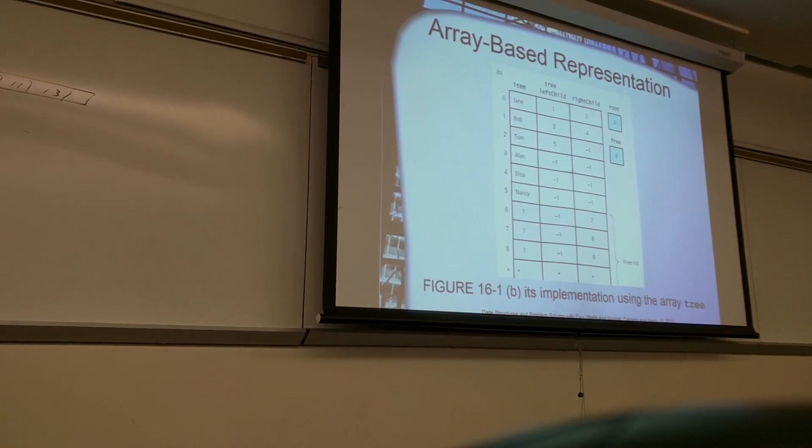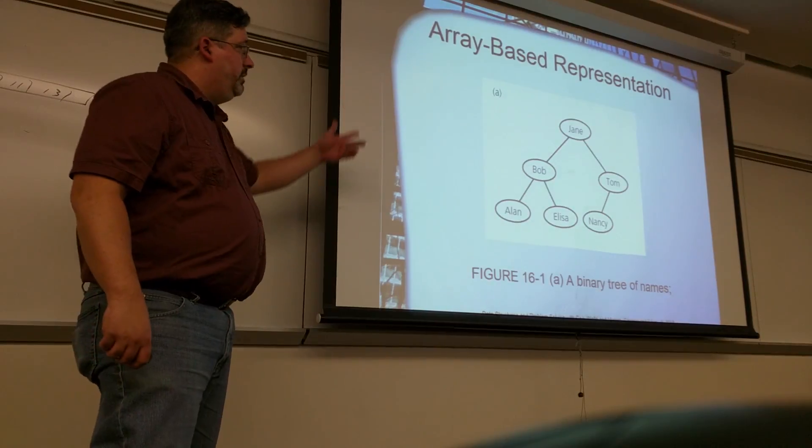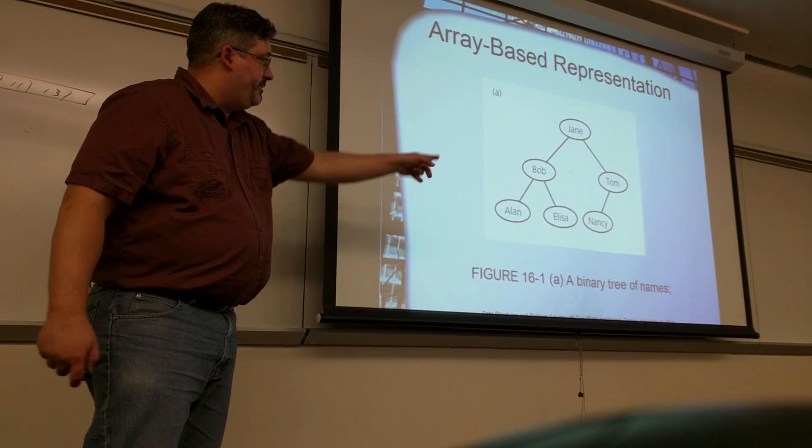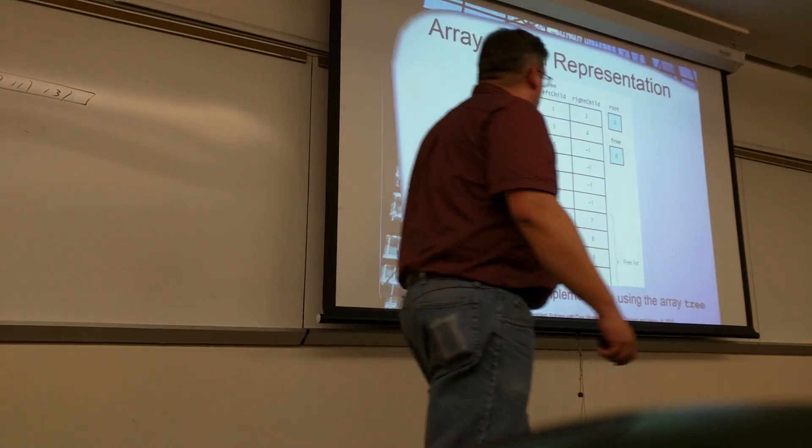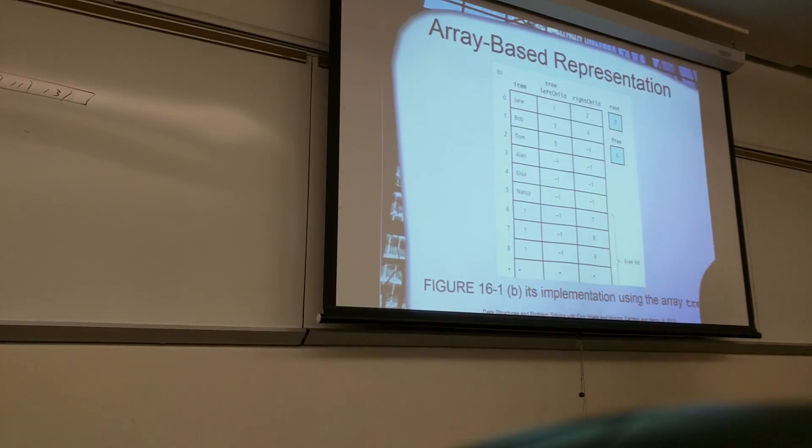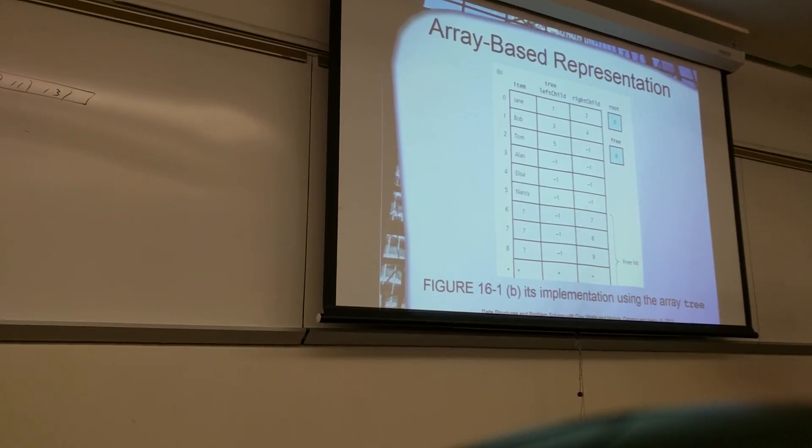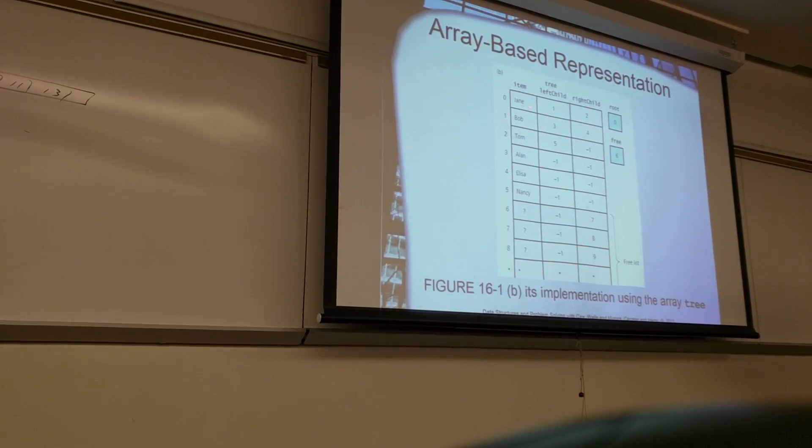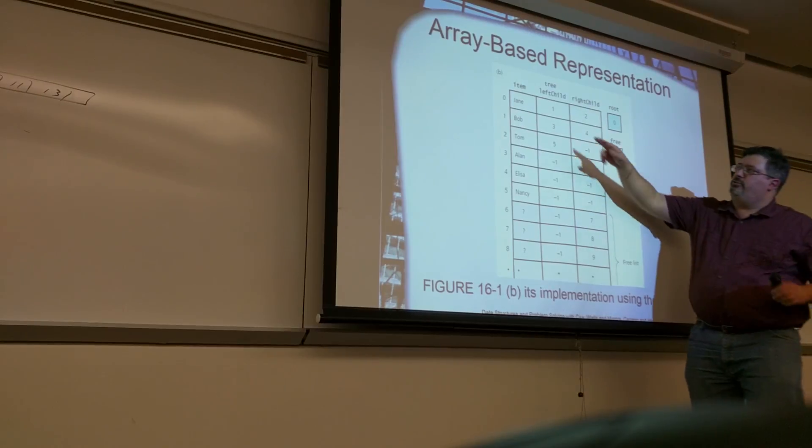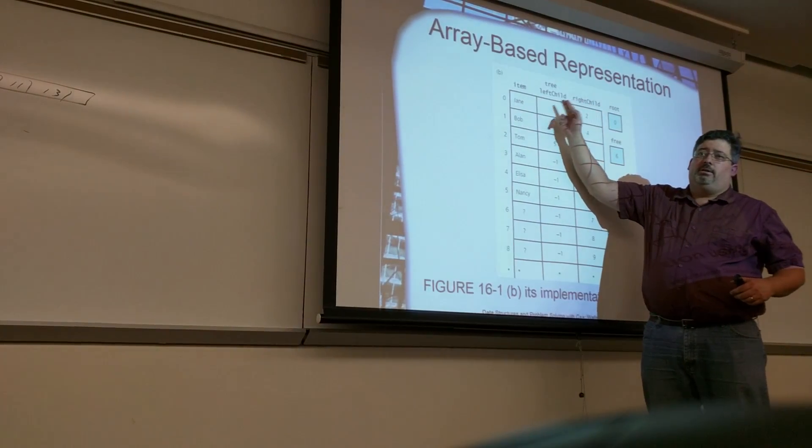So what we do in an array-based representation, this is the tree we're looking at. It's our normal name of the tree, it's just missing Windy over there. So in my array, I have the item, it's like a multi-dimensional array here. I have the item, then I have the index for the left child, the index for the right child. I said multi-dimensional array, but I should have said these are just the structs that we talked about.